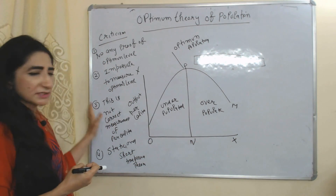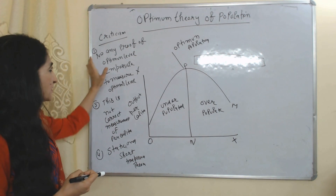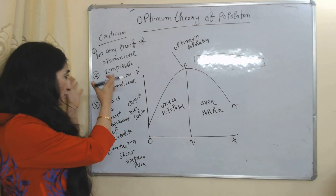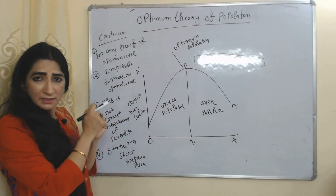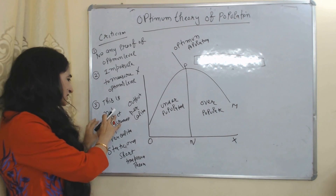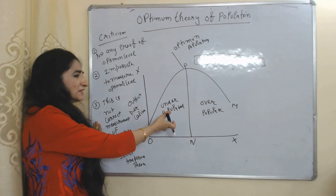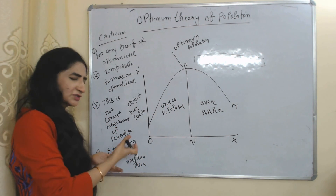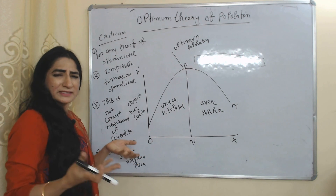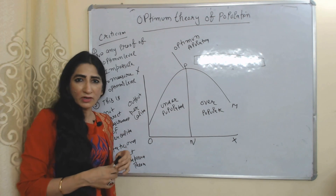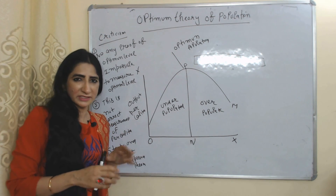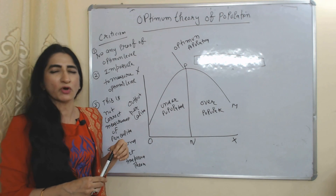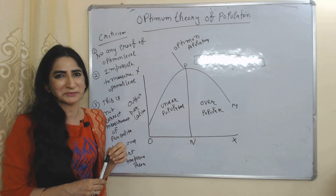Now we will see the criticism of this theory: there is no proof of the optimum level, it is impossible to measure the optimum level, it is not a correct measurement of per capita income, and this theory is a short time period and static theory. So this is all about theories of population. Thank you so much for watching this video.